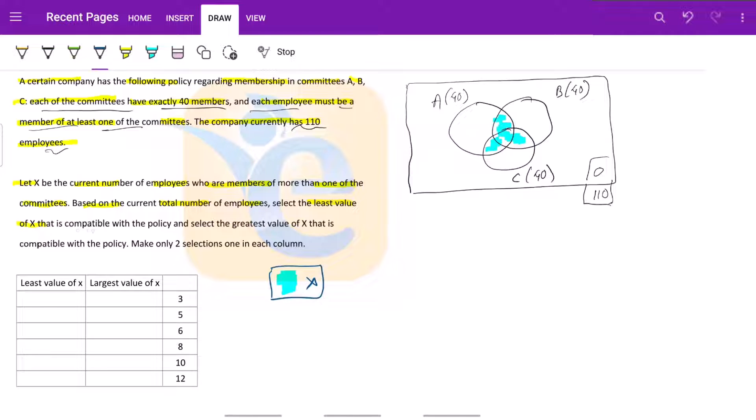And what we need to do is select the least value of X that is compatible with the policy and select the greatest value of X that is compatible with the policy. So we need to minimize X and maximize X. Let us use simple basic concepts of Venn diagram to solve this question.